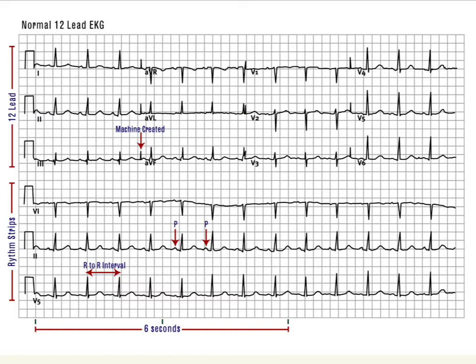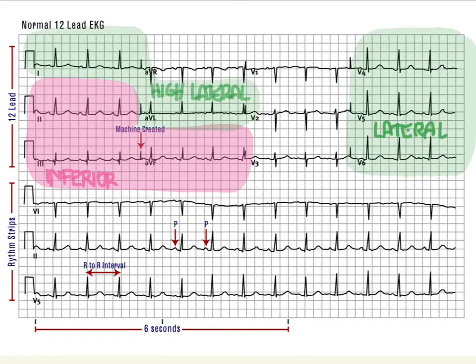Let's look at where the inferior leads are. These are the inferior ones, and the lateral ones are mainly 1 and L — V4, V5, V6. And then the anteroseptal leads are V1, V2, and V3.